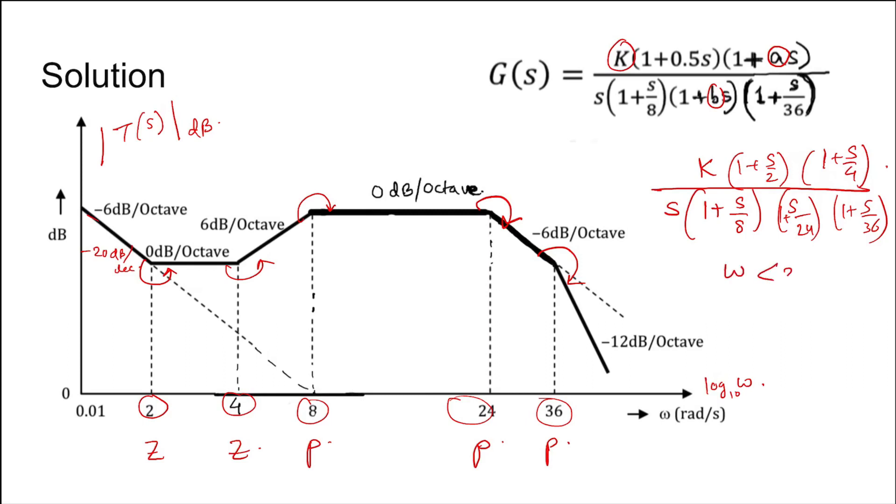For omega less than 2, the transfer function T(s) reduces to k/s. So the magnitude of the transfer function is k/omega. In dB we have 20 log k base 10 minus 20 log omega base 10.